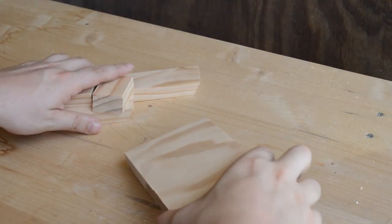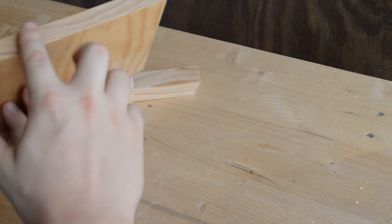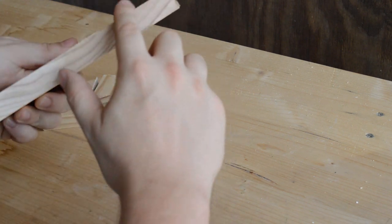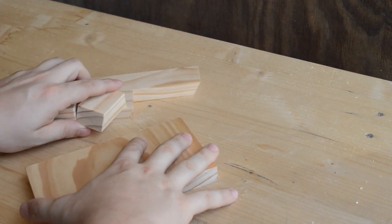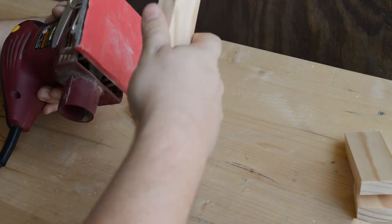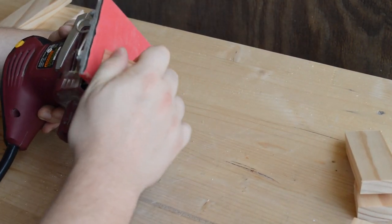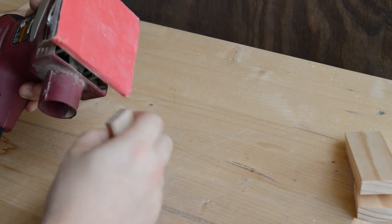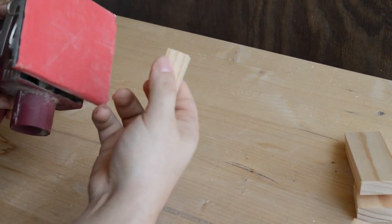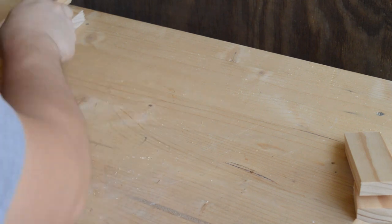I would recommend giving all the edges a quick sand. Depending on how rough or smooth your cuts are, you're going to want to sand accordingly. I normally sand with a belt sander, however you can use any type of sander. I'm currently using a palm sander here.